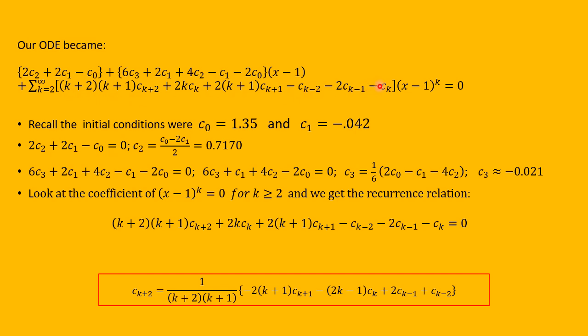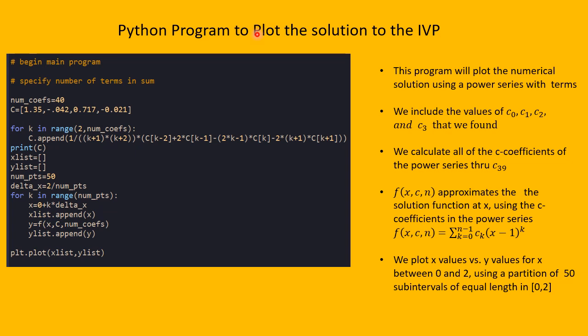Setting the coefficient of (x−1)^k to zero for all k ≥ 2 yields a recurrence relation solving for c_{k+2} in terms of earlier coefficients. Together with the known values of c₀, c₁, and so forth, this recurrence relation allows us to use a Python program to plot the solution to the initial value problem.